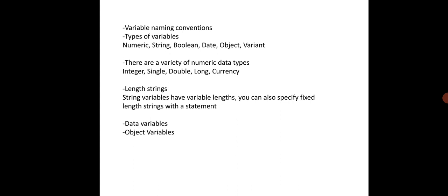The types of variables are: numeric, string, boolean, date, object, and variant. There are a variety of numeric data types: integer, single, double, long, and currency.